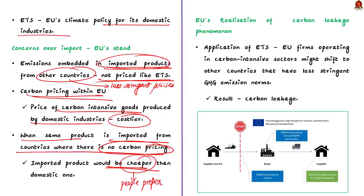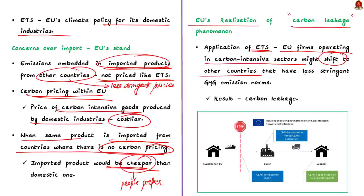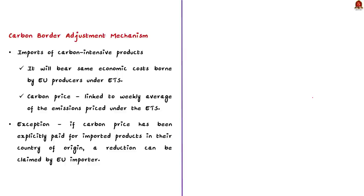Later, the EU realized the phenomenon of carbon leakage. Due to the ETS, European firms operating in carbon intensive sectors might shift to countries with less stringent GHG emission norms, leading to carbon leakage. This would render the EU's ultimate aim of reducing greenhouse gas emissions futile. Therefore, to address this issue, the European Union introduced CBAM — the Carbon Border Adjustment Mechanism.